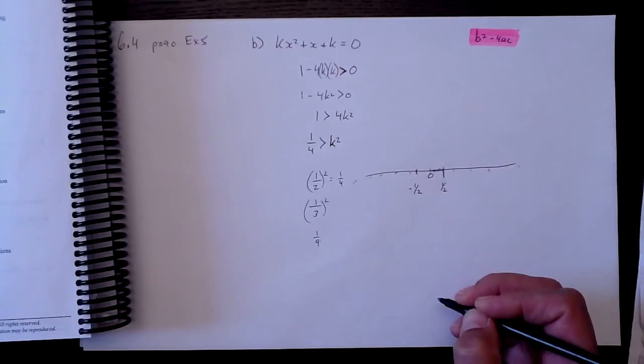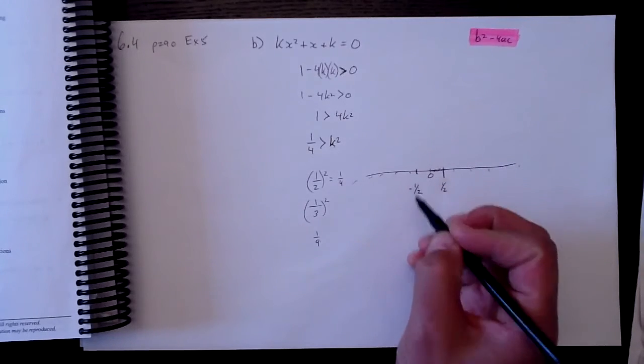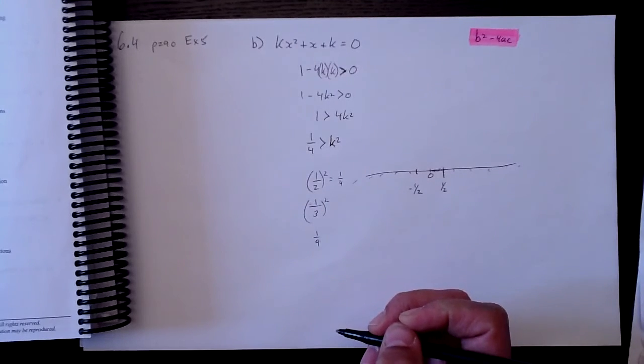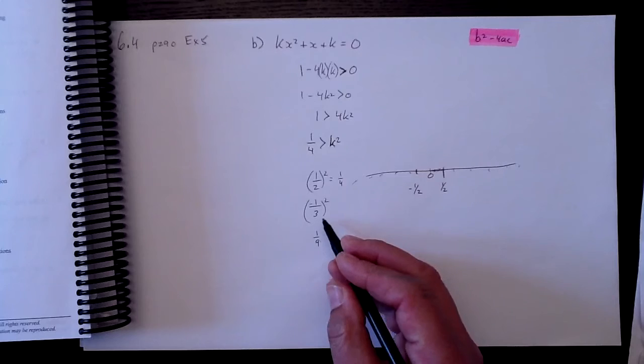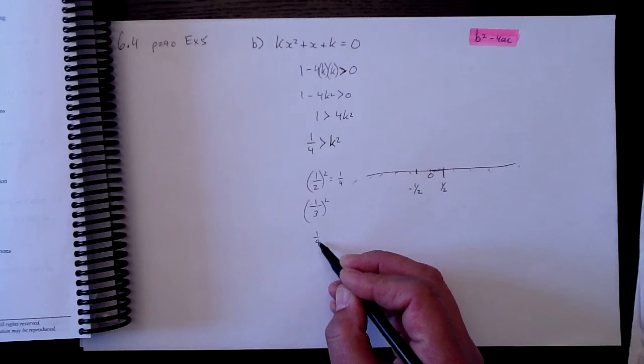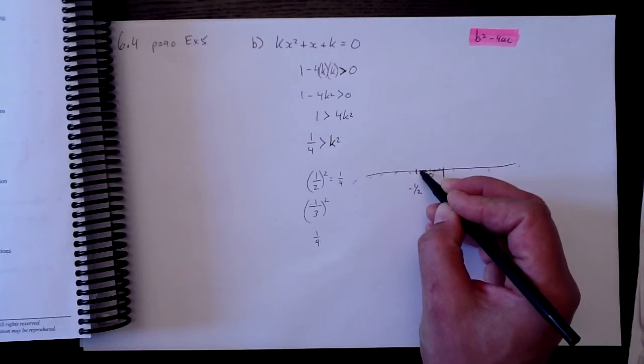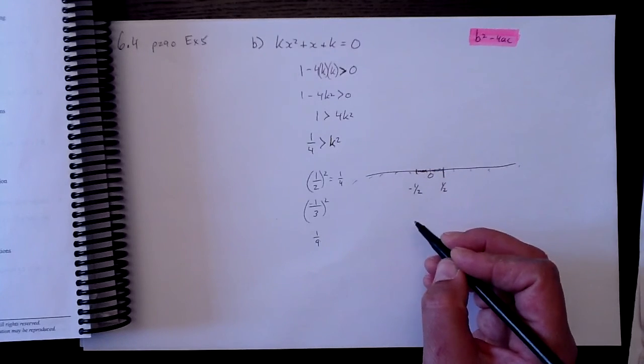Anything in there is all right. Let's look on the negative side. If I had negative 1 third, and it was squared, I would end up with a ninth. So all that's okay, too, because 1 ninth is, in fact, less than 1 quarter.